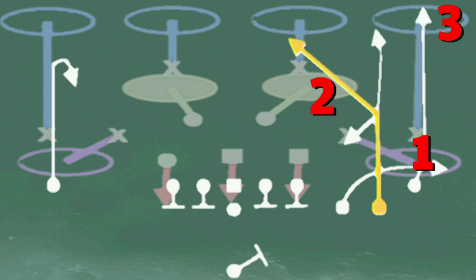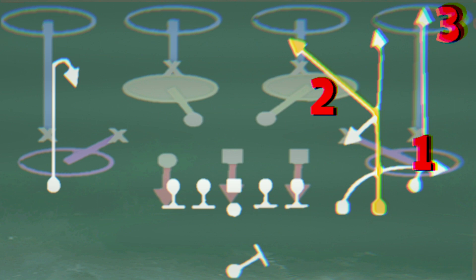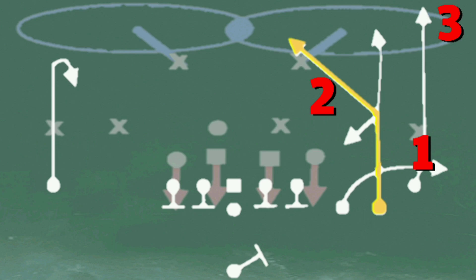Verse cover 2 man, the streak read will also be a post. Verse man, I find that if the first two reads are covered, instead of going to the fade third, I'll actually go to that curl as my third read.